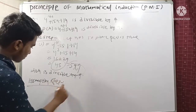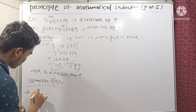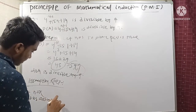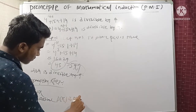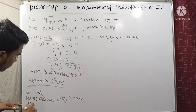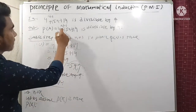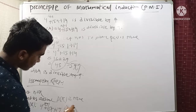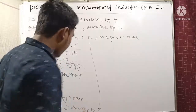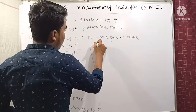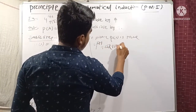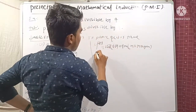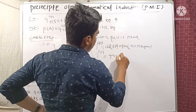Assumption Step: Let us assume P(k) is true. So 4^(k+1) + 15k + 14 is divisible by 9, meaning 4^(k+1) + 15k + 14 = 9m for some integer m. From this, 4^(k+1) = 9m − 15k − 14.